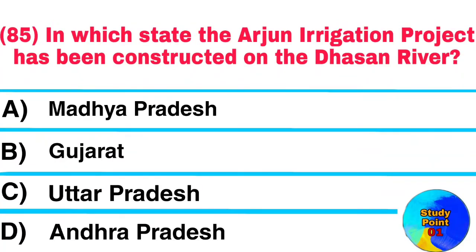Question No. 85. In which state has the Arjun Irrigation Project been constructed on the Dhasan River? Answer: Uttar Pradesh.